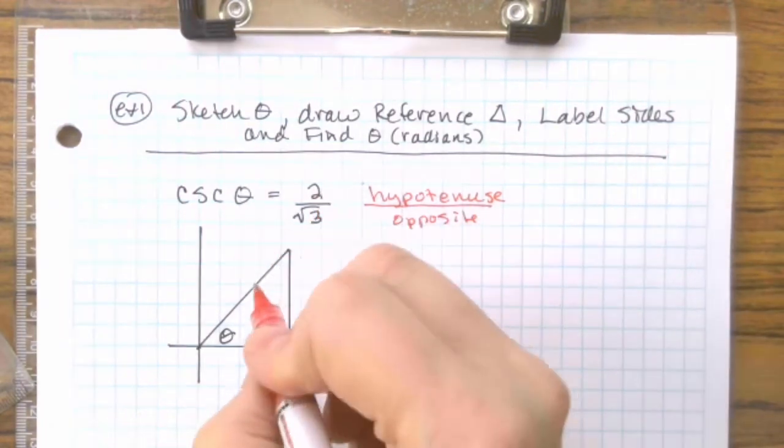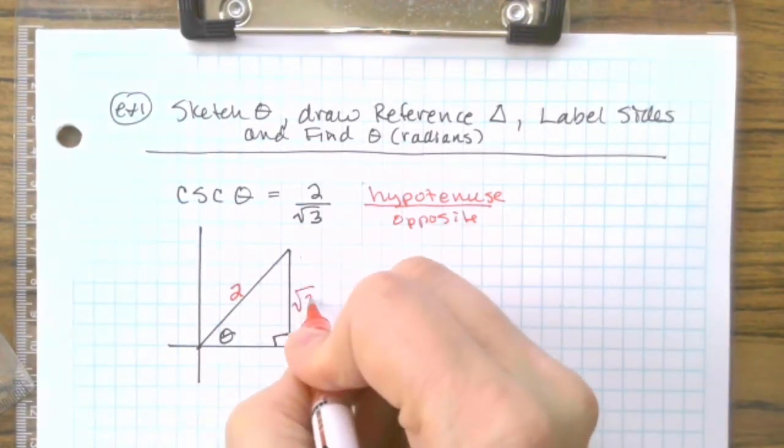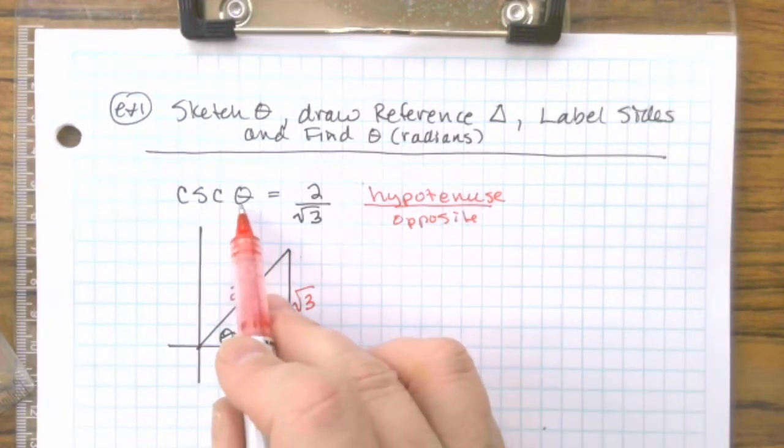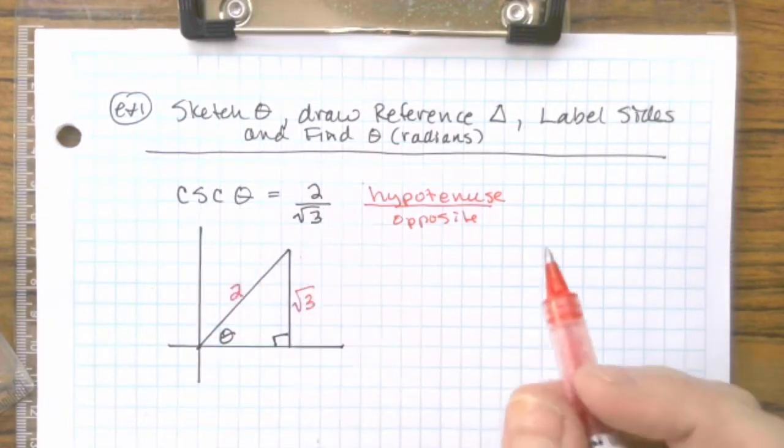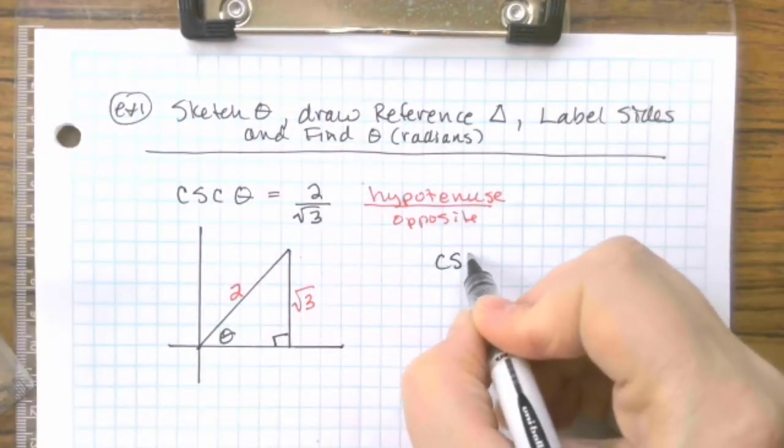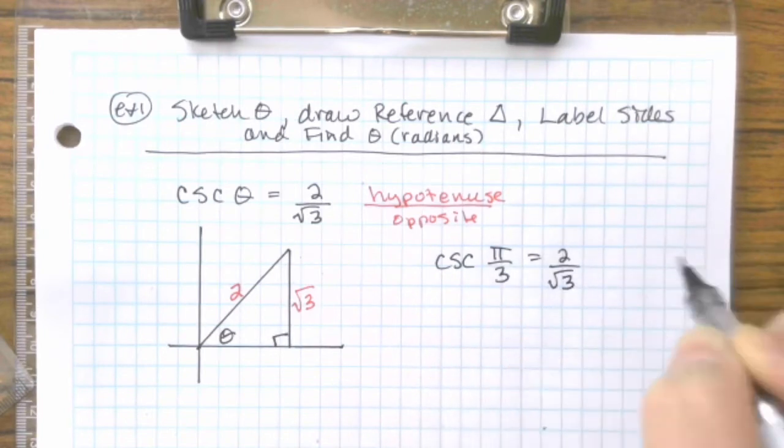Cosecant is hypotenuse over opposite side. So hypotenuse is 2. Opposite side is radical 3. So we need to find the third side. If you can remember that the cosecant angle that gives you 2 over radical 3 is cosecant of π/3. That's one of your memorized angles.